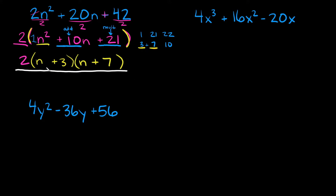Now in case you wanted to check your answer, all you would have to do is FOIL — just FOIL these two sets of parentheses, get your answer, and then distribute this 2 at the very end. You would find that you get straight back to 2n squared plus 20n plus 42, which means if you get back to where you started, you know you did it right.